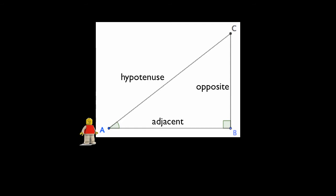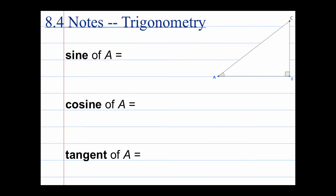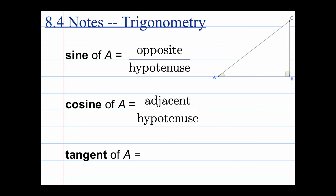Trigonometry is a way of relating these side lengths back to that original angle of reference. So for example, if I asked for the sine of angle A, the sine is defined as opposite divided by hypotenuse. The cosine of angle A is the ratio adjacent over hypotenuse. And the tangent of A is the ratio of opposite over adjacent.